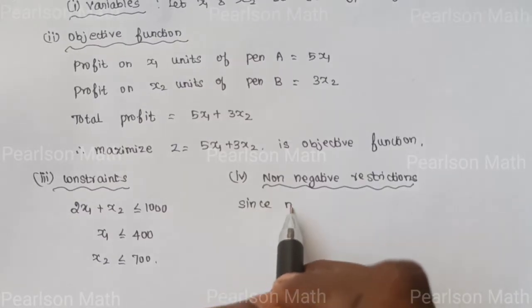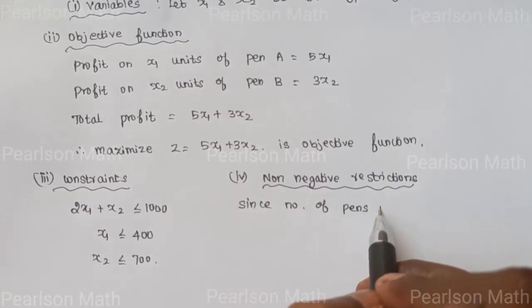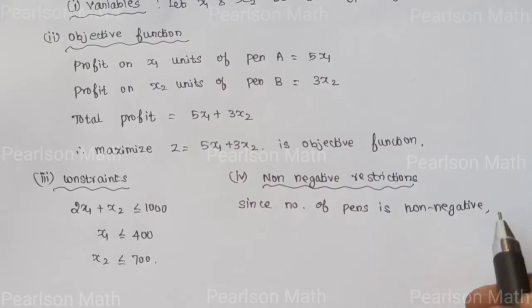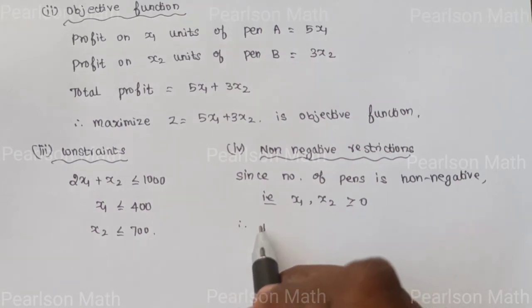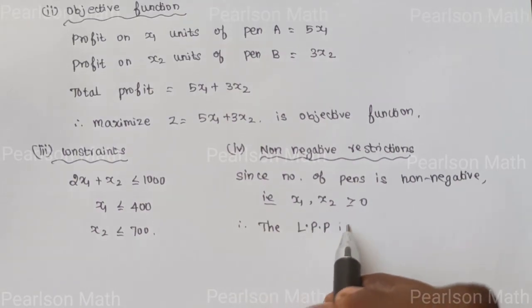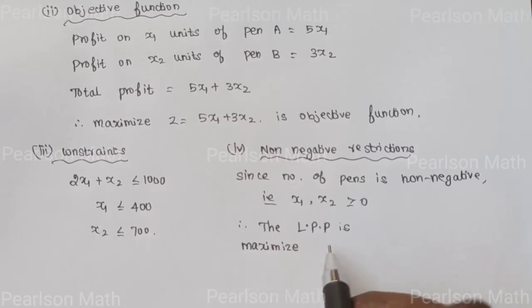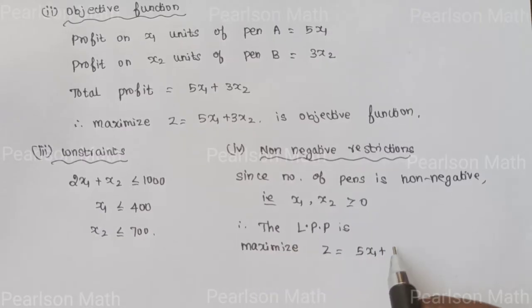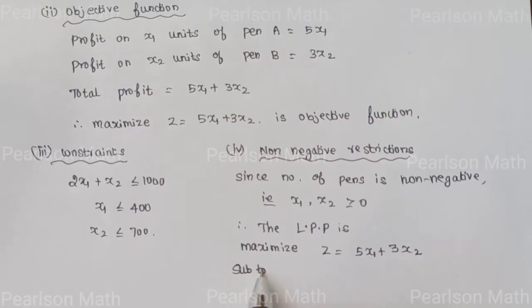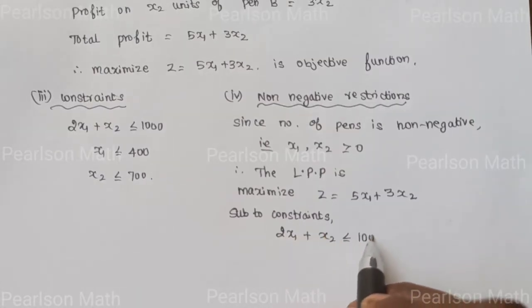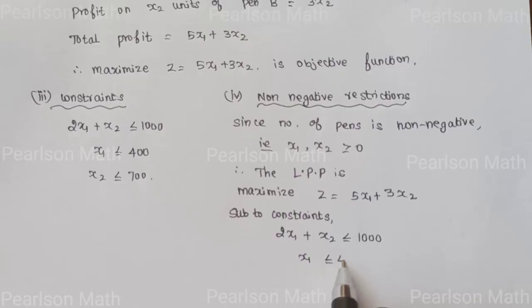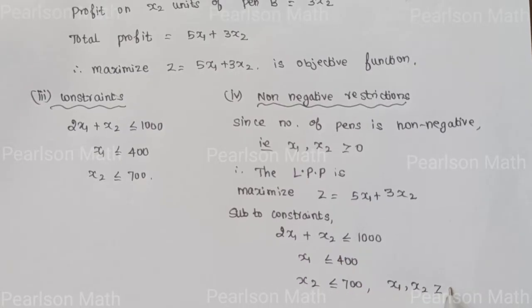The fourth condition is the non-negative restriction. Since the number of pens is non-negative, X1 and X2 are greater than or equal to 0. Therefore, the linear programming problem is: Maximize Z equal to 5X1 plus 3X2, subject to constraints: 2X1 plus X2 less than or equal to 1000; X1 less than or equal to 400; X2 less than or equal to 700; X1, X2 greater than or equal to 0.